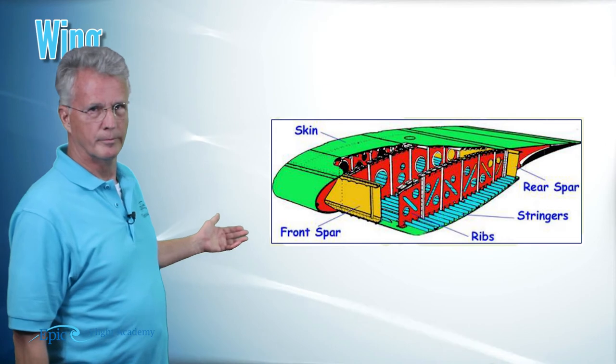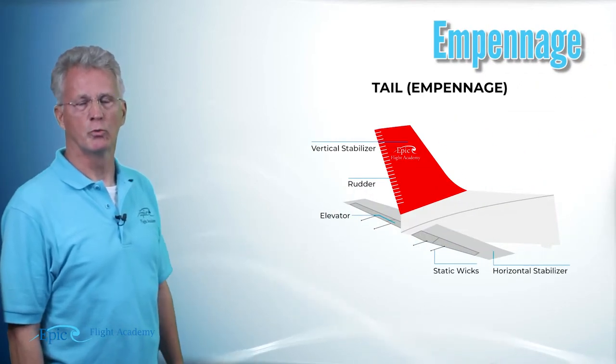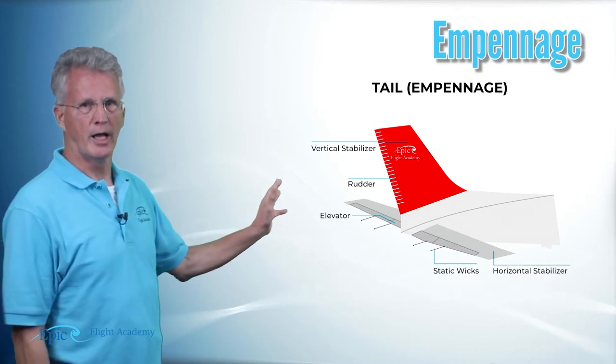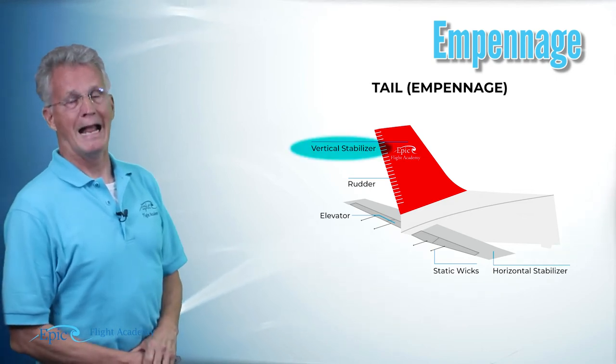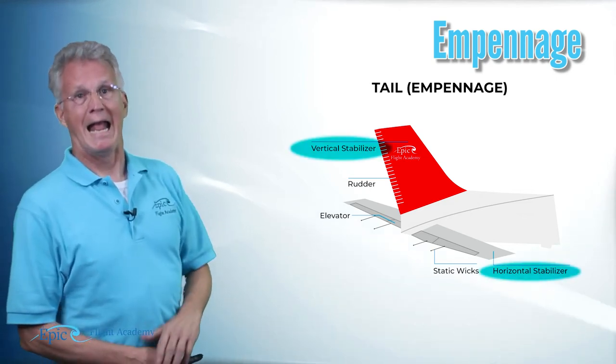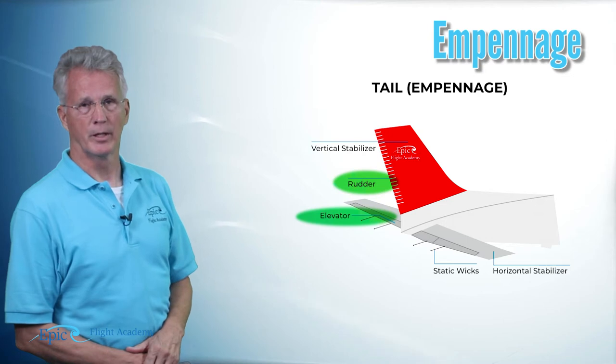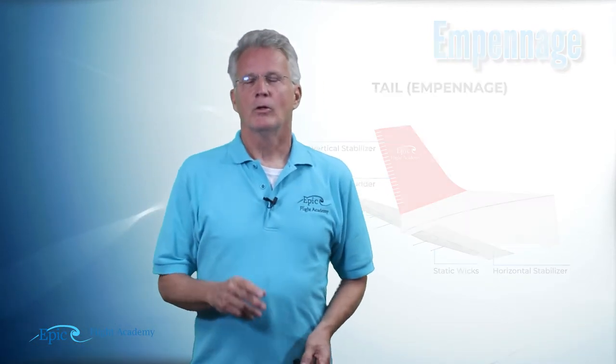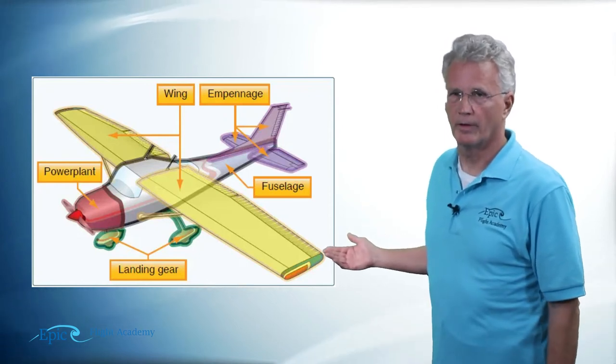So we've looked at the wing. The second major part we want to examine is the empennage. Now that's a French word and it's referring to the entire tail of the aircraft. And you can see that here, it's going to include the vertical and horizontal stabilizers and the primary flight controls that are attached to the horizontal and vertical stabilizer. So looking at the wing and the empennage together, let's look back at this aircraft. Do you see our three primary flight controls?